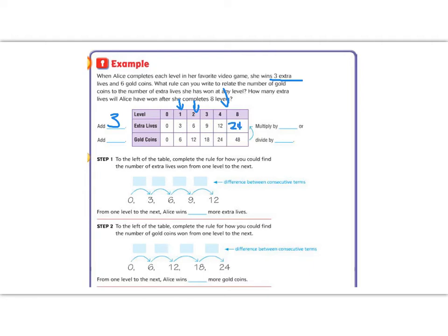Now let's look at the number of gold coins. She gets six gold coins for every level. So our rule is we're going to add six. So we have six, and then twelve, and then eighteen, and then twenty-four, and then we have forty-eight.